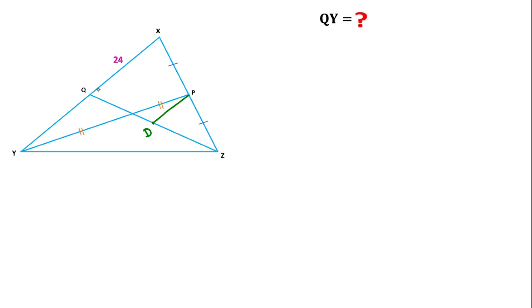And the length of this PD line segment will be equal to half of the third side. That is, PD will be equal to half of the length of QX according to the midpoint theorem. Then we can write one-half times 24, which is equal to 12. So PD length is equal to 12.